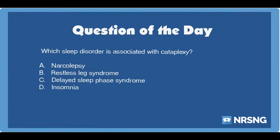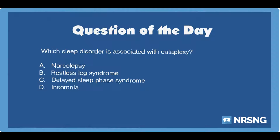The answer is A. Narcolepsy. Cataplexy describes an involuntary loss of muscle function that is temporary. Cataplexy is most commonly associated with narcolepsy, which involves increased sleepiness during the daytime. A patient with narcolepsy may take medications that act as stimulants to help keep them awake. Some of these medications may also treat episodes of cataplexy.